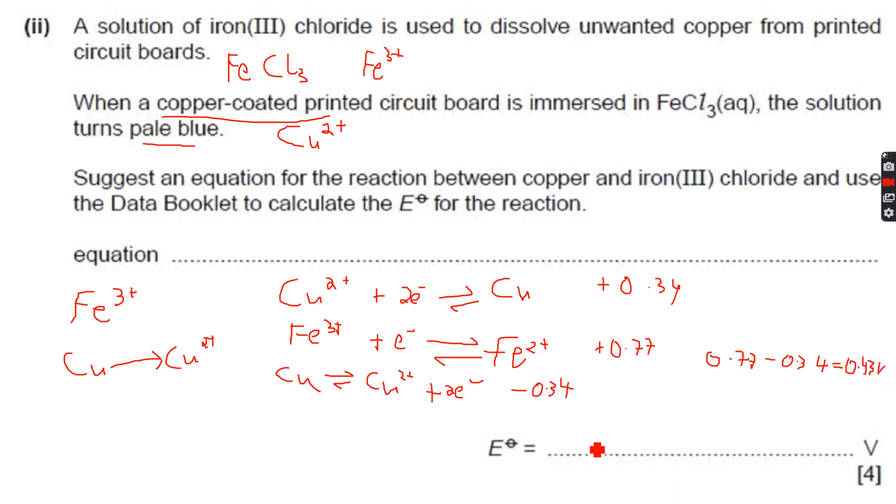The E° is equal to +0.43 volts. Now we have to write the equation for the overall reaction. For that we can see that here we have two electrons but here we have only one, so let's multiply this equation by two.